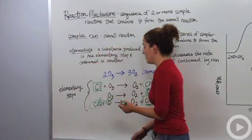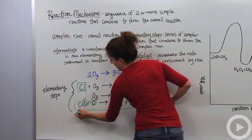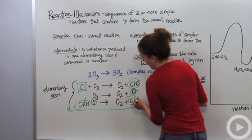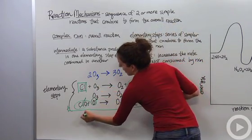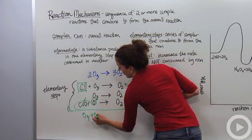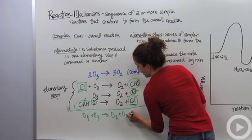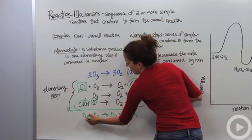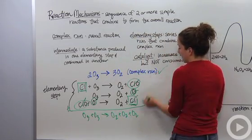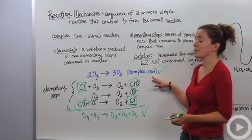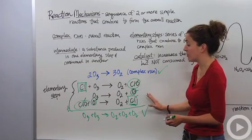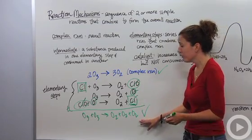So if we were to add this up. I'm going to cross out the catalyst because we're not going to include that either. We get O3 plus O3 yields O2 plus O2 plus O2. 2O3 plus 3O2 is exactly what our complex reaction states, so they should add up to get our complex reaction.